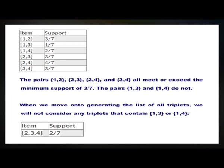The pairs {1, 2}, {2, 3}, {2, 4}, and {3, 4} all meet or exceed the minimum support of 3 out of 7. The pairs {1, 3} and {1, 4} do not. When we move on to generating the list of all triplets, we will not consider any triplet that contains {1, 3} or {1, 4}.